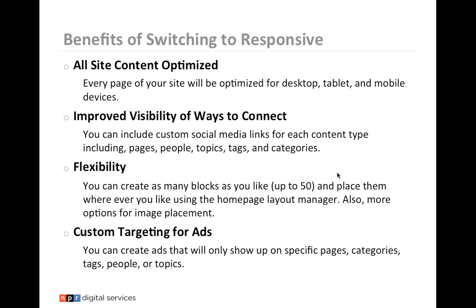There is more flexibility — you can create as many blocks as you like, up to 50, and place them wherever you like in the homepage Layout Manager. There are more options for image placement with the Block Factory. You can now create your own block. Stations were saying they want two announcement blocks, or a program promo, or multiple lead story setups. You can now create as many blocks as you like and place them in any region of your site. You also have custom targeting for ads — you can create ads that will only show up on specific pages, categories, tags, or topics, and you can also negatively custom target.